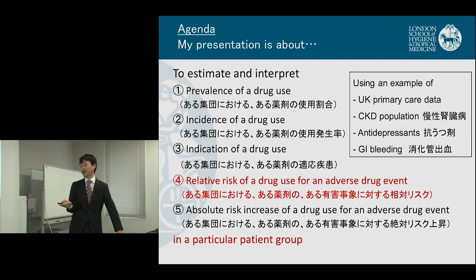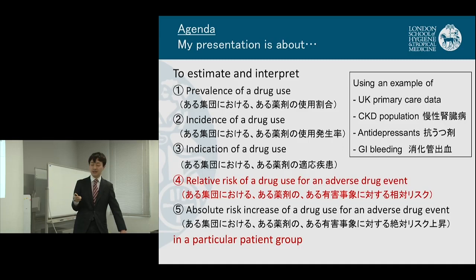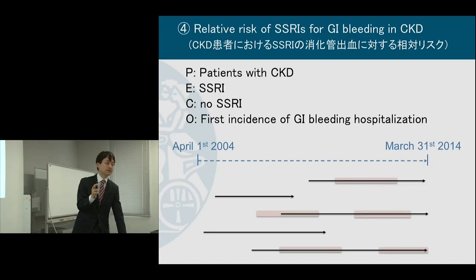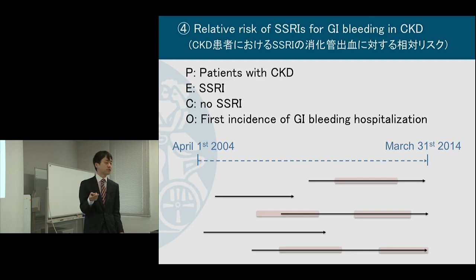We're looking at the relative risk of drug use for an adverse drug event in a particular patient group, using the example of GI bleeding with SSRIs as antidepressants. GI bleeding is a well-established side effect of SSRIs because they affect platelet function. Patients receiving SSRIs are generally more likely to have GI bleeding in the general population, but it's unknown among the CKD population.